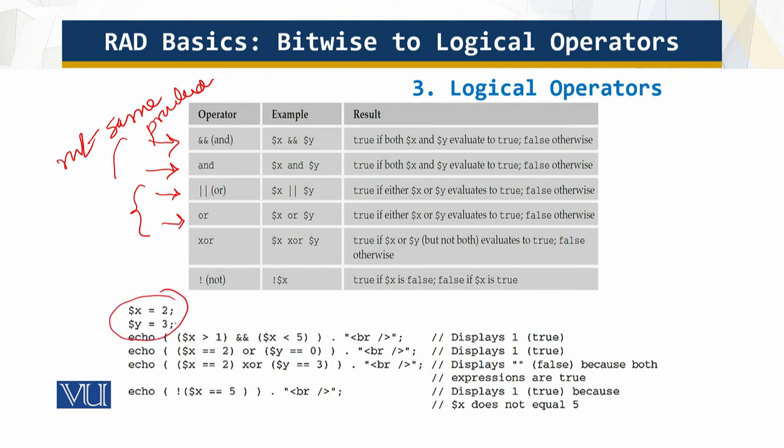So assuming x is equal to 2 and y is 3, let's look at over here. x is greater than 1, and x is less than 5. So this is true. We get a true over here. But over here, if you see that x is equal to 2 and y is 3, why wrong? Because this is xOR, exclusive OR. Both cannot be true. If they are true, then it's false. So this is how these operators are working over here.